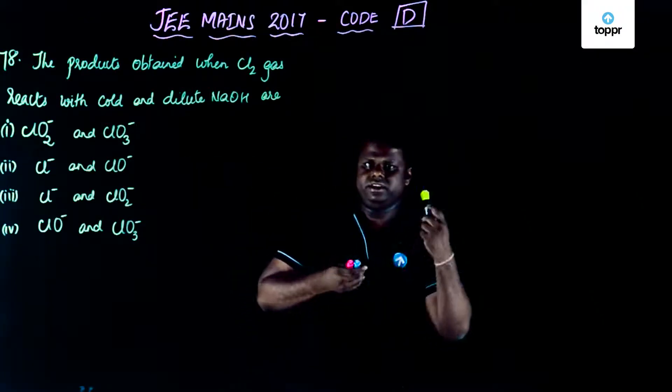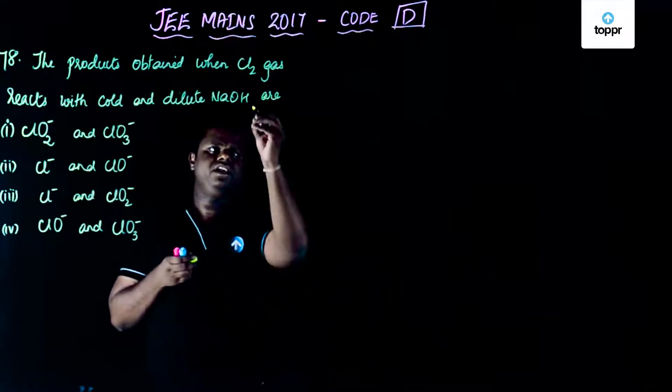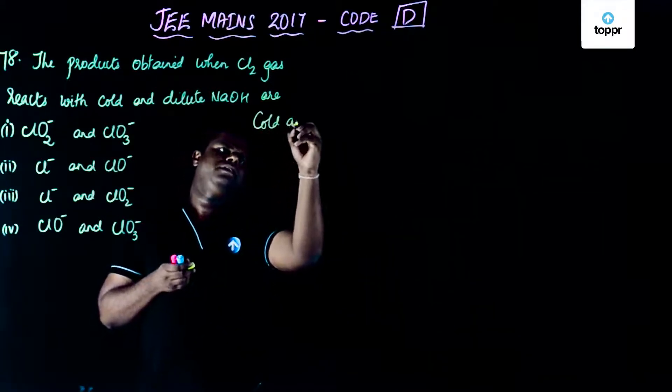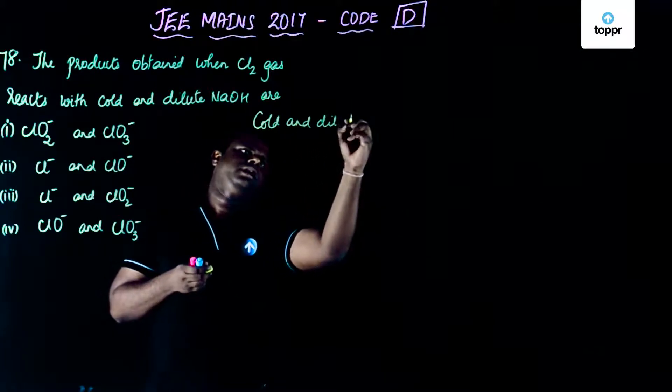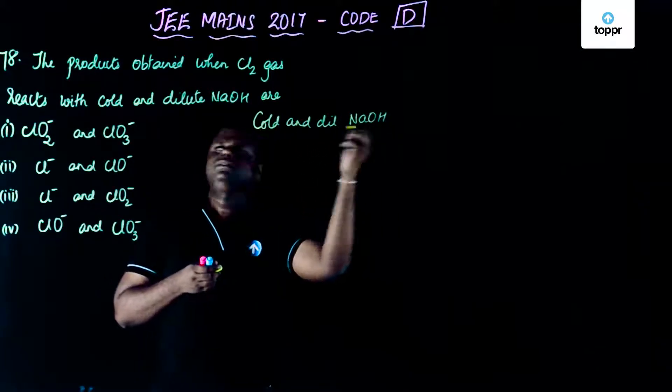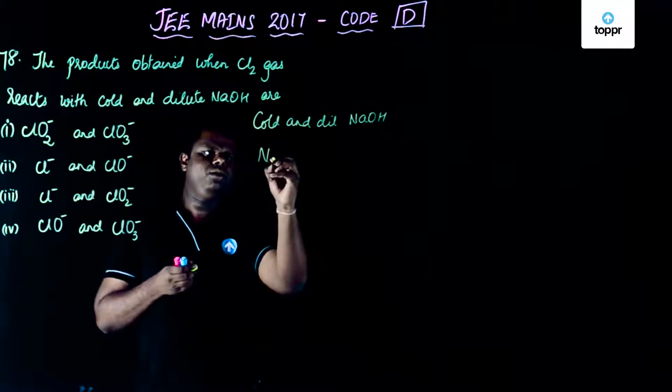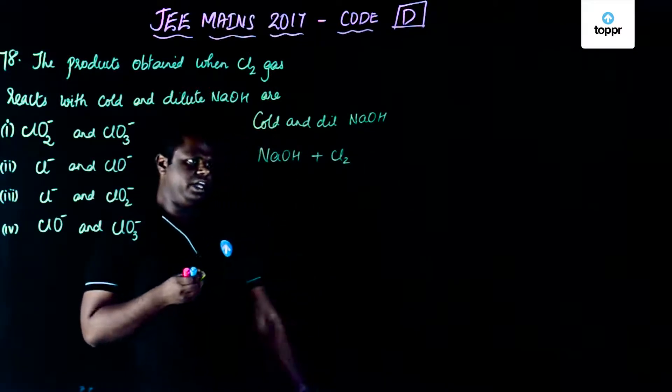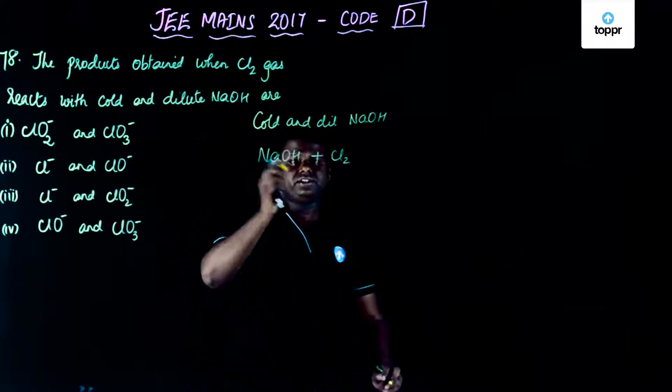Let's write down the reaction first of all. In the condition when you have cold and dilute NaOH, what exactly happens? You have NaOH reacting with Cl2, correct? So how is the reaction going to happen?